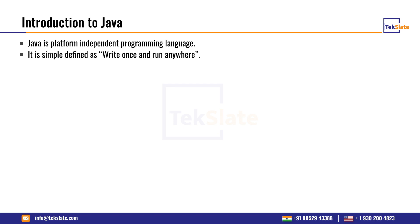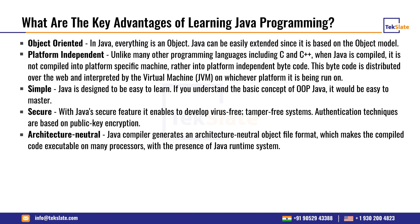What are the key advantages of learning Java programming? Java is an object oriented programming language. Everything in Java has an object model — a reference is created for your class, and through this object we can do various actions in the class. Functions can be called, and that is what makes Java's object model special.